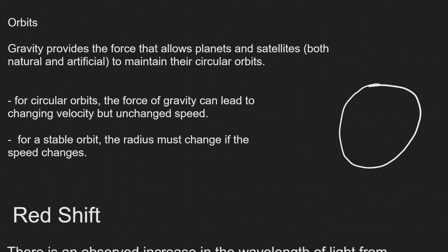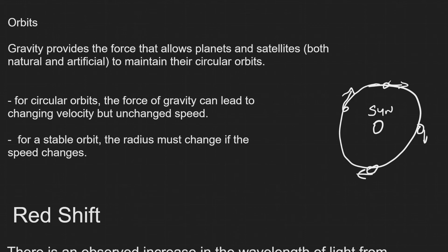The reason why this happens is because the actual direction changes. So if we have something like the sun or a star, and a planet orbiting it, it's the actual direction that changes along the orbit — pointing one way here and another way there — but the magnitude of the speed remains exactly the same. For a stable orbit, if the speed is going to change, the radius must change.